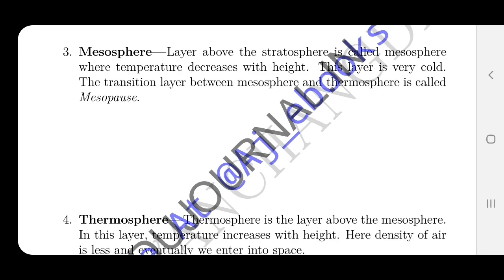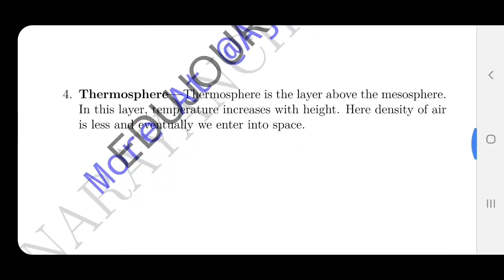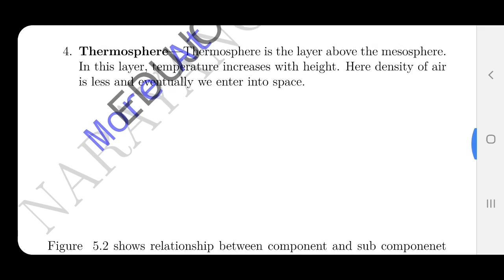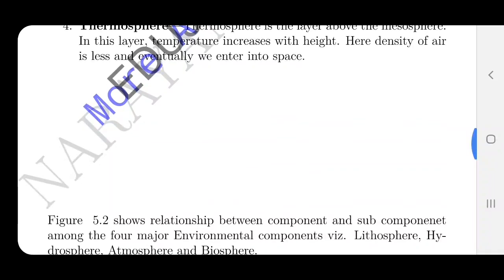The boundary between the mesosphere and the next layer is called the mesopause. The thermosphere is the fourth layer. Here, density of air is less and eventually we enter into space.